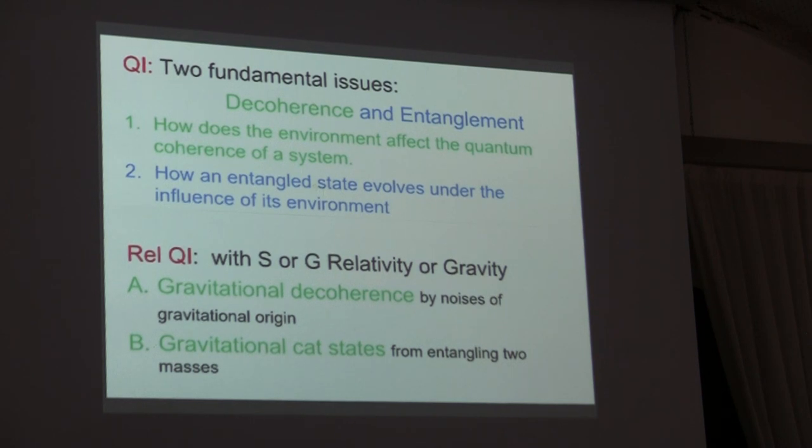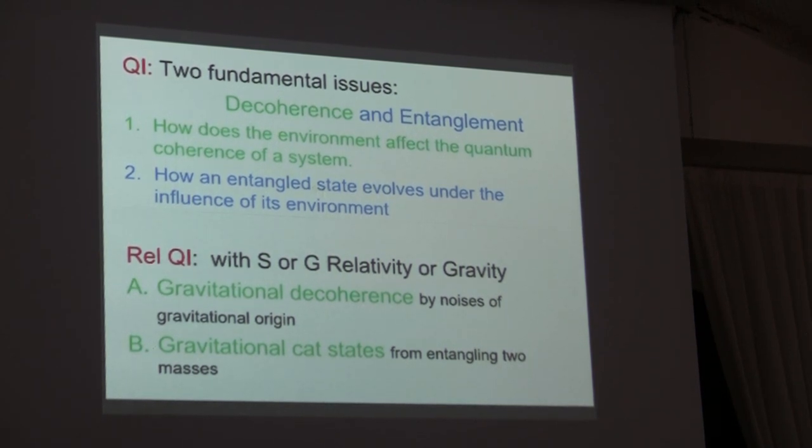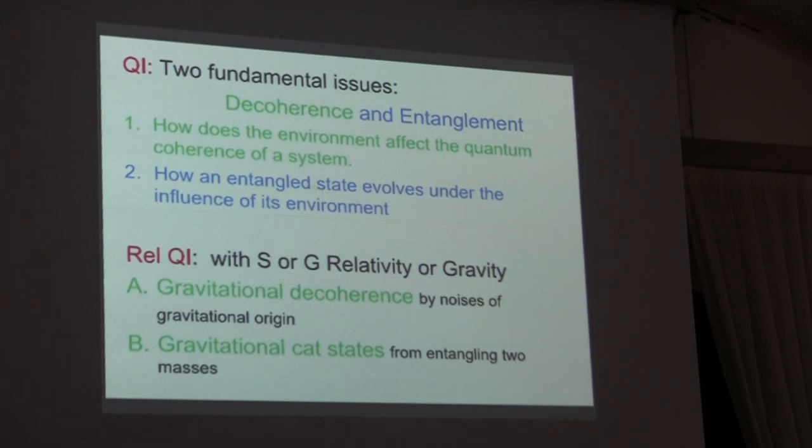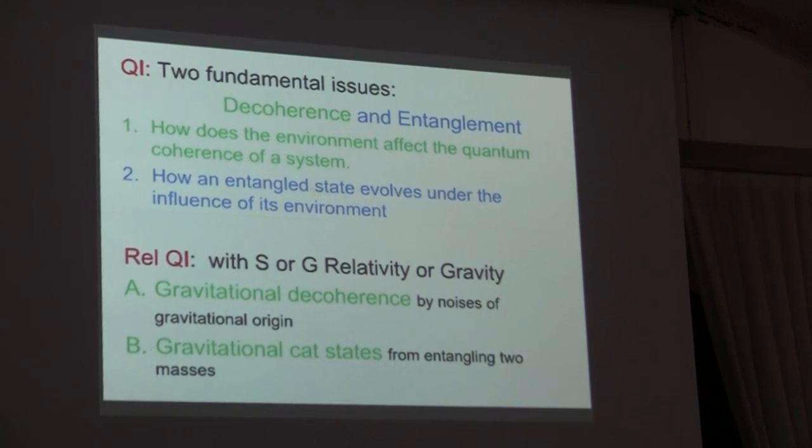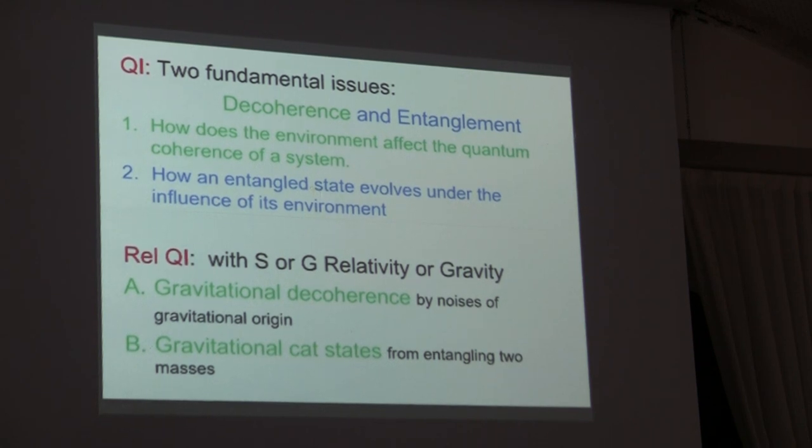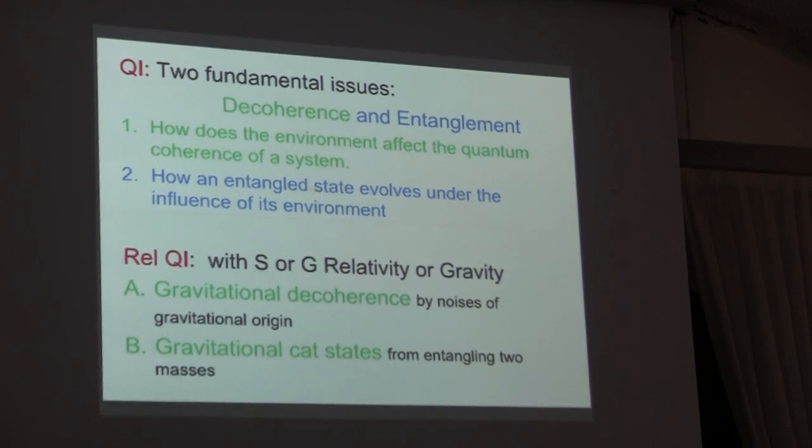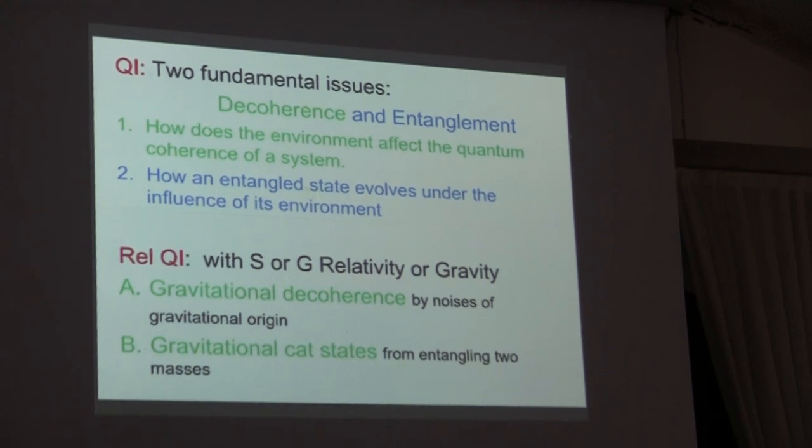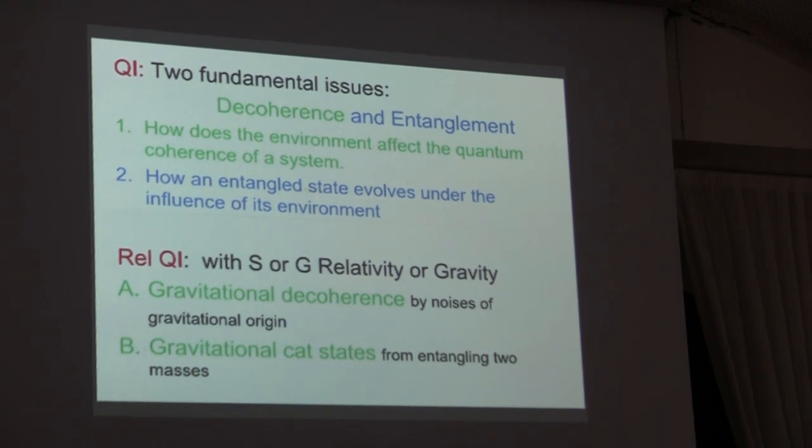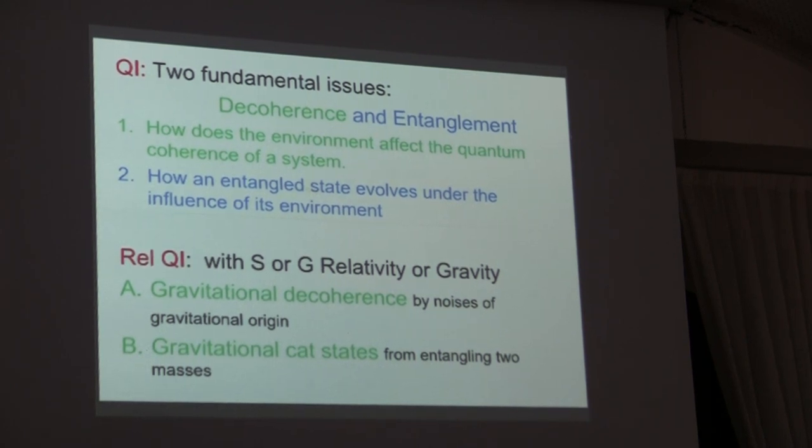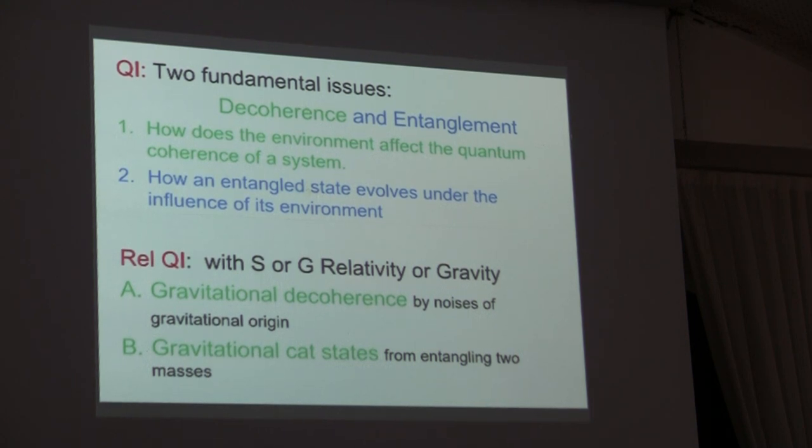And in quantum information, I would just think of two aspects. One is decoherence, and the other is entanglement. The question is, how does the environment affect the quantum coherence of a system? If you have some really cute idea and try to convince people to give you a big bundle of money, the first thing you need to do is calculate your decoherence time. If it's not long enough to perform any quantum computing, don't ever try to submit anything.